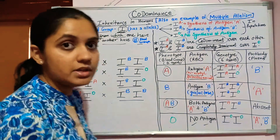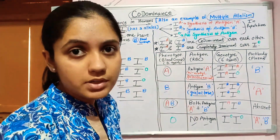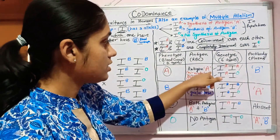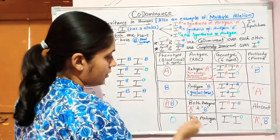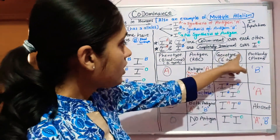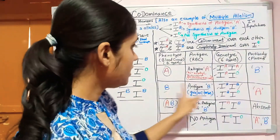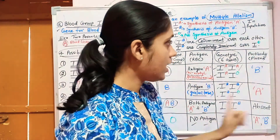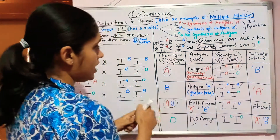On the surface of red blood cells, sugar polymers are present known as antigens. Antigen A is an N-acetylgalactosamine type sugar polymer and antigen B is a galactose type sugar polymer. Blood group AB has both antigen A and B; blood group O has no antigen. For antibodies: blood group A has anti-B antibody, blood group B has anti-A antibody, AB has no antibody, and O has both anti-A and anti-B antibodies.